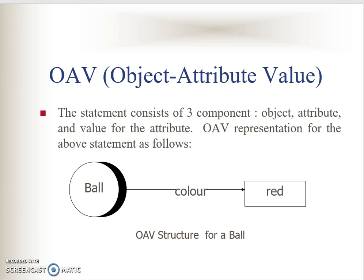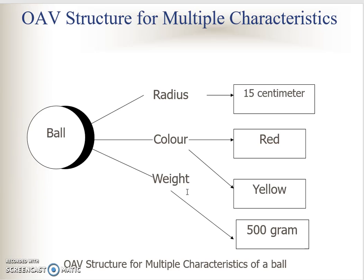Coming back to the first sentence: the colour of the ball is red. How do we represent multiple values? Here is a description of a ball. The ball has a radius of 15 cm. Normally one ball can only have one radius, but if you have a balloon ball, you might have a radius of 15 cm when slightly blown, 15.5 cm blown more, and 16 cm at maximum.